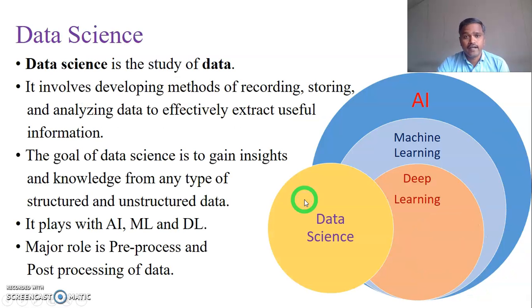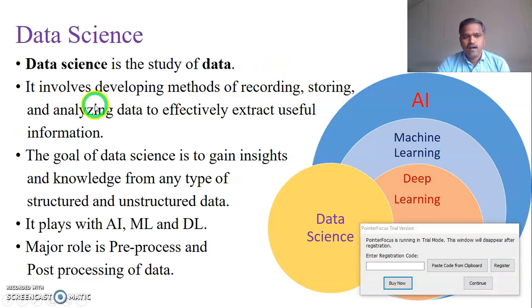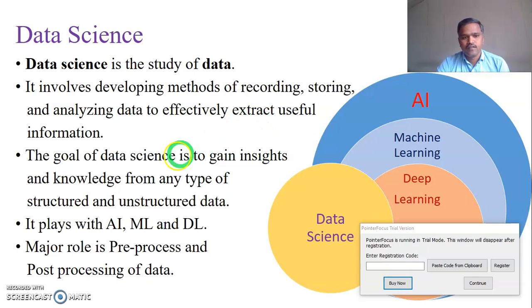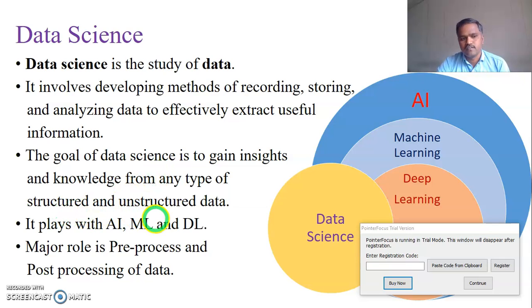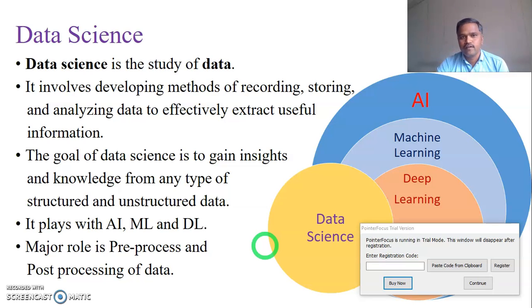The fourth topic is data science. Data science is the study of collected data. It involves different kinds of methods to record, store, and analyze stored data effectively, extracting useful information from it. The goal of data science is to gain in-depth knowledge about collected data, which may be structured or unstructured. Data science works with all three technologies — artificial intelligence, machine learning, and deep learning.